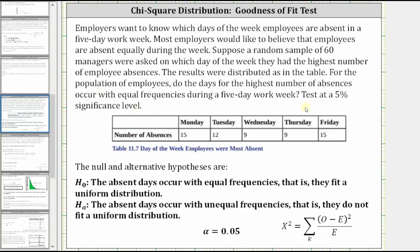So to begin, because we are testing at a 5% significance level, alpha is equal to 0.05. And now for the null and alternative hypotheses, since the question is do the days for the highest number of absences occur with equal frequencies during a five-day workweek,